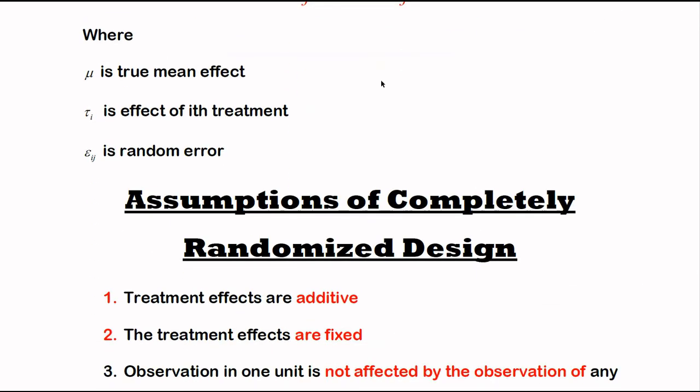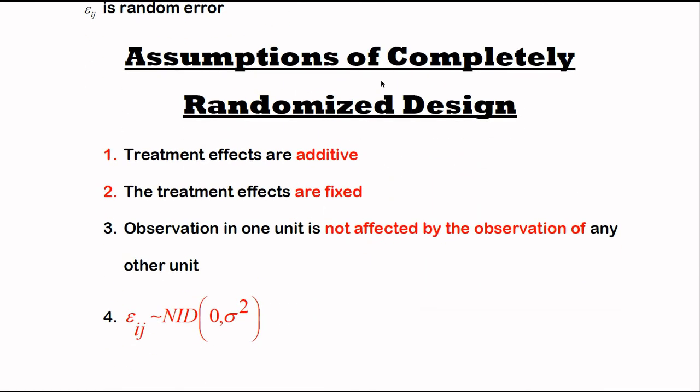form. The assumptions of completely randomized design are: 1) Treatment effects are additive, so we can add the treatment effects. 2) The treatment effects are fixed. 3) Observation in one unit is not affected by the observation of any other unit.